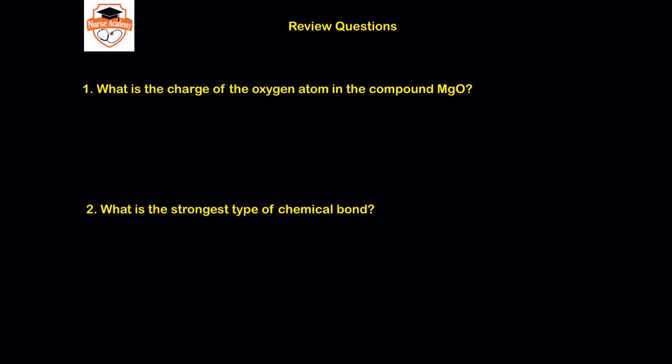Question two: what is the strongest type of chemical bond? The strongest type of chemical bond discussed here is the covalent bond — the sharing type of bond is the strongest type of chemical bonding.